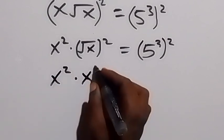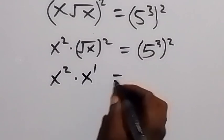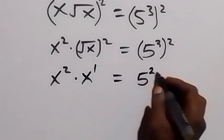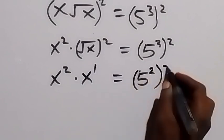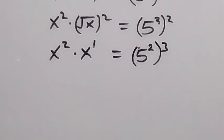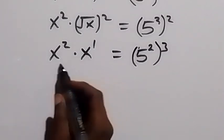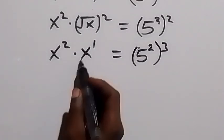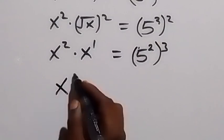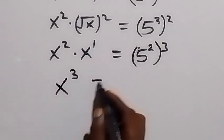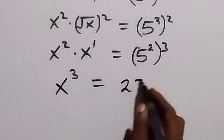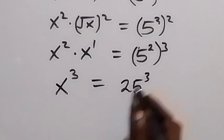This is x raised to power 1. Let's interchange — that's 5 squared raised to power 3. From the law of indices, the same base — we add the powers together — so this gives us x raised to power 3. On the right side, we can write this as 25 raised to power 3.